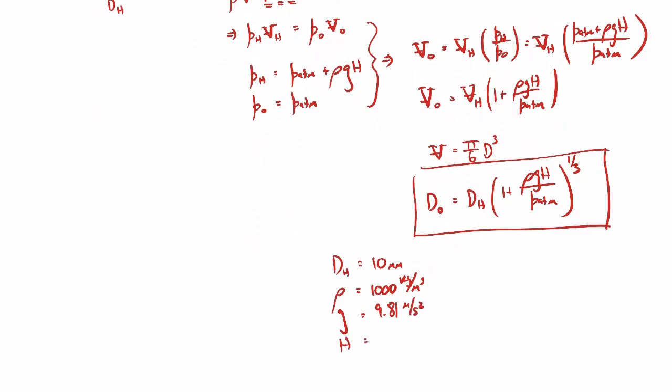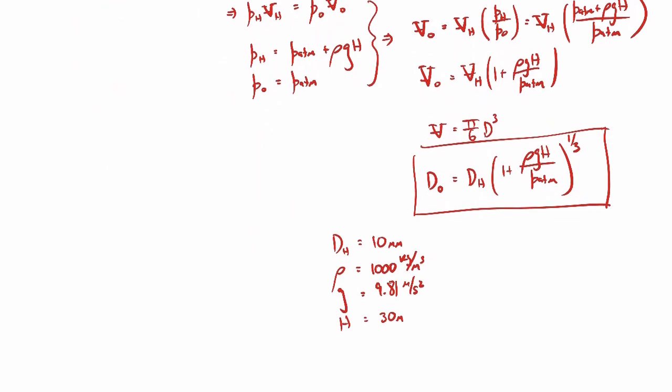P atmosphere is 101.3 kilopascals. So when we plug all these numbers in, what you'll find is the diameter at the free surface comes out to be 15.7 millimeters.